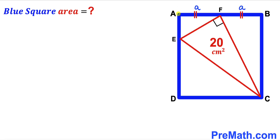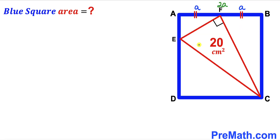So the whole side AB length is a plus a, giving us 2 times a. Since we are dealing with a square ABCD, all side lengths are the same. Therefore this side length is 2a, this side length is 2a, and likewise this side is 2a as well.